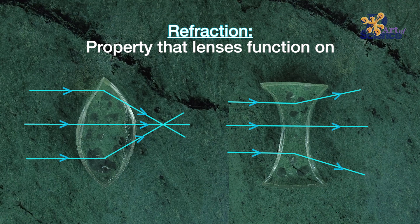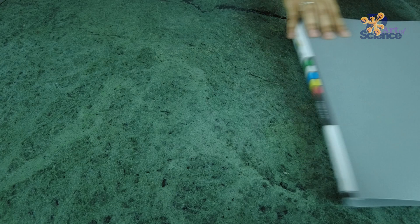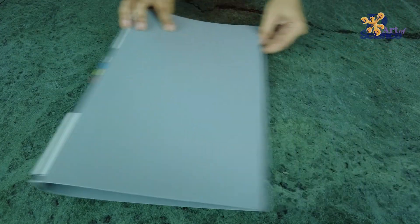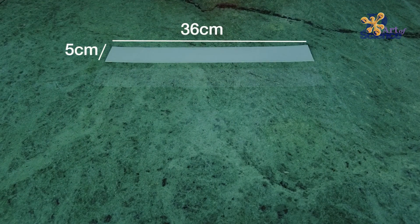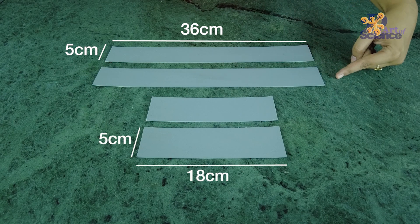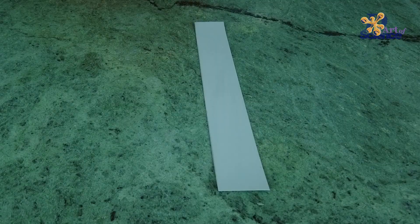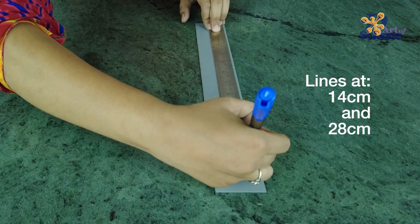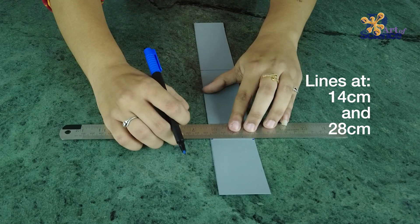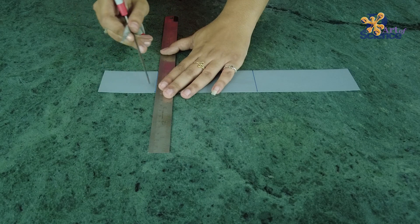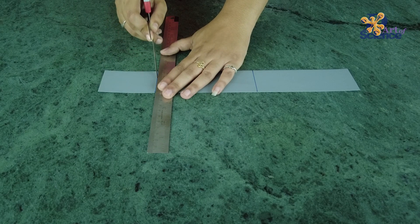For the mold, start with a plastic file and cut out four pieces of 5 centimeter width - the longer ones measuring 36 centimeters and the smaller ones measuring 18 centimeters in length. In the longer piece, mark two lines at 14 centimeters and 28 centimeters from the top. Use a ruler and the sharp end of a scissor to fold the piece along the line as shown.